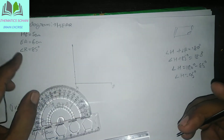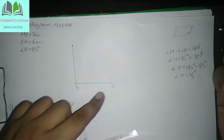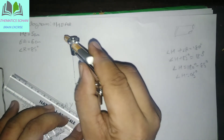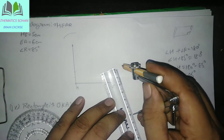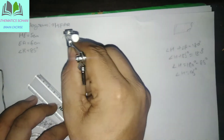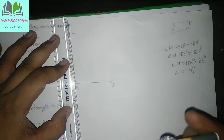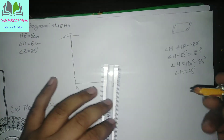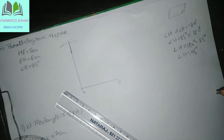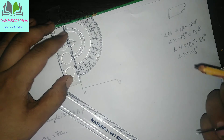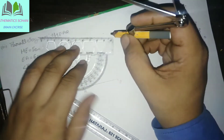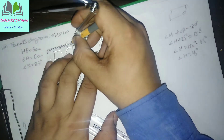Aur dekho jab 6 cm hai — jo parallelogram hoti hai opposite sides equal hoti hain — toh hum ek 6 cm yahan se 6 cm ka arc khol dete hain. Aa draw kar dete hain — A is center mankar yahan pe hamari 6 cm. Yahan se lekar 6 cm humne draw kar liya. Aa. Yahan apna aa jayega. Ab humne kya karna hai — yahan pe 85 degree ka angle banakar isko aage produce kar denge. Isko yahan pe aapka 85 degree yeh angle aa gaya — yeh 85 degree aa jayega. Aur isko humne is point se saath join karke aage produce kar denge.